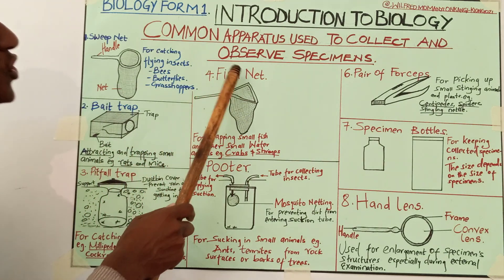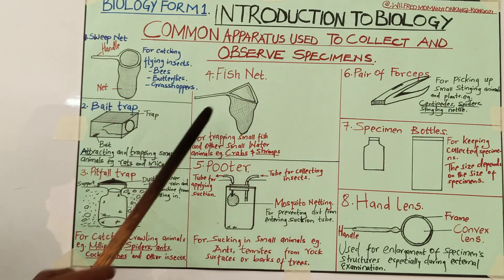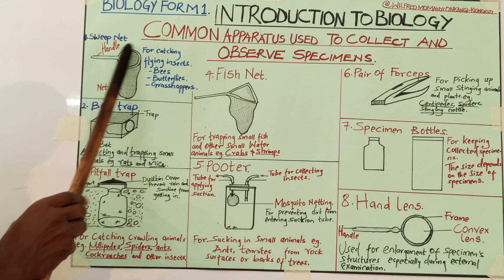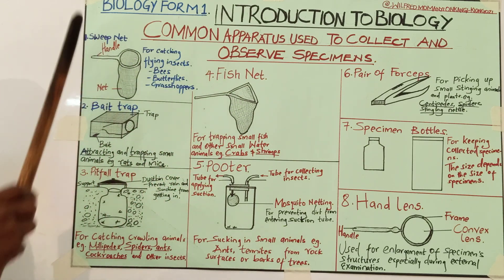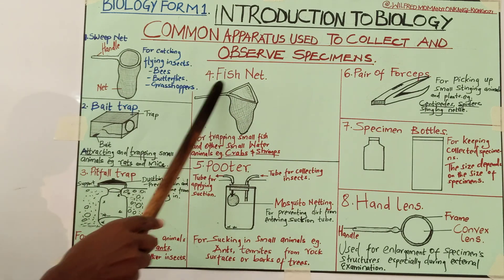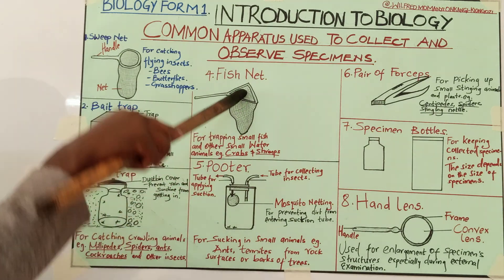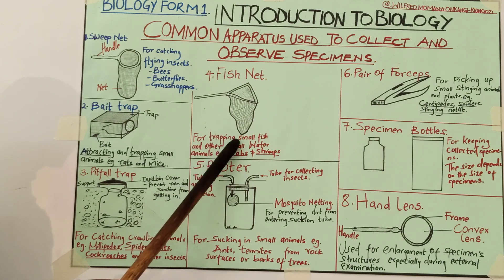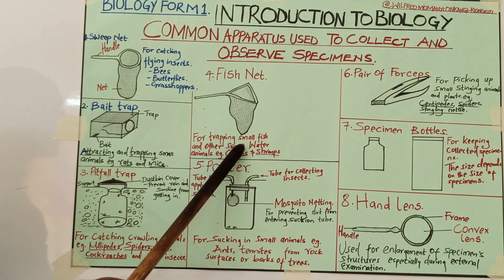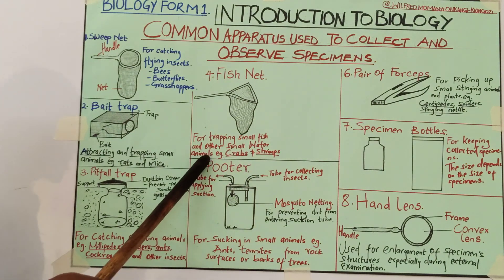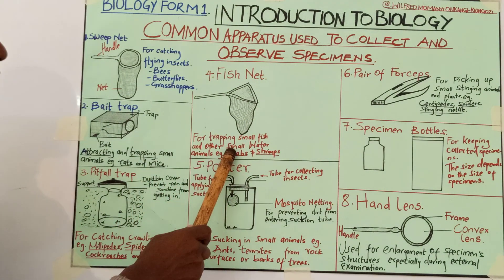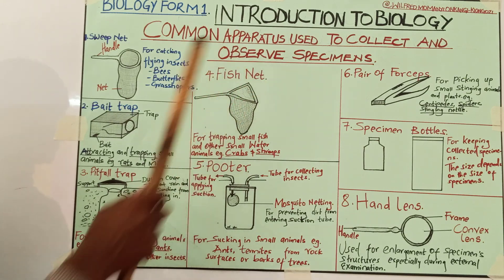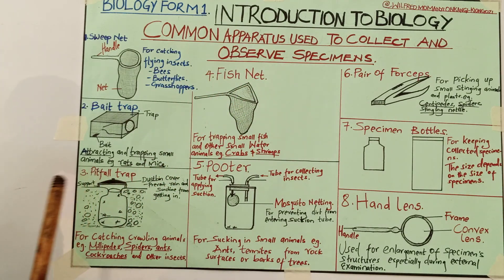Number four is the fish net. The fish net also looks like a sweep net but there is a slight difference on its top. It has a handle, just like the sweep net, and a space in which the specimens will enter. It is used for trapping small fish and other small water animals, for example crabs and frogs.